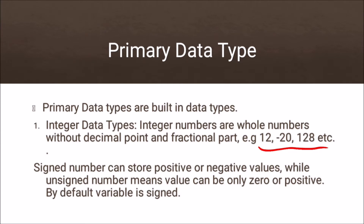In integer, there are basically two types: signed number and unsigned number. Signed numbers can store positive or negative values, while unsigned numbers can be zero or positive only — no negative value can be stored. By default, if you do not specify whether it is signed or unsigned, the variable is signed.